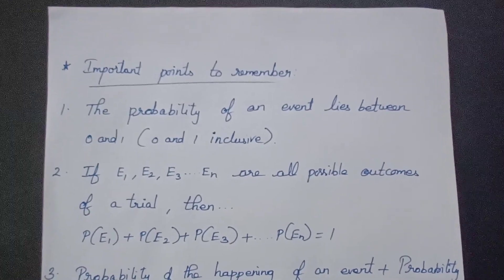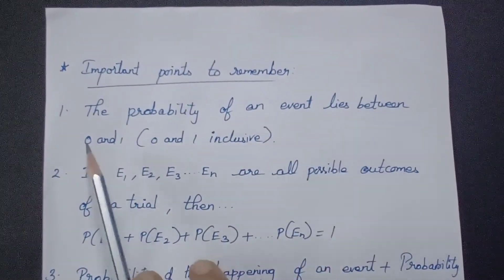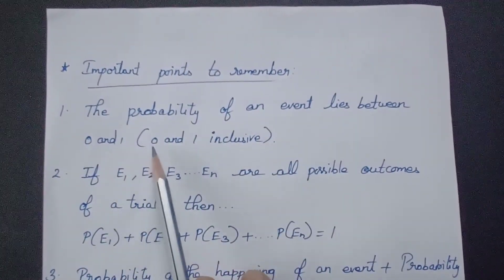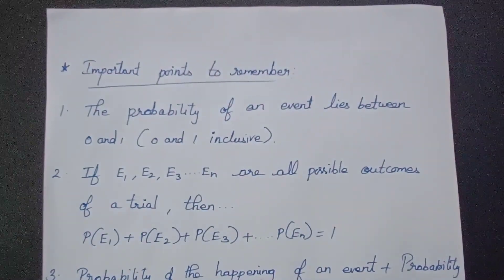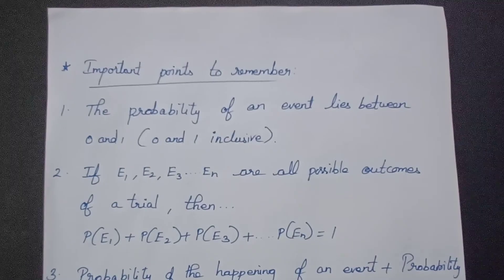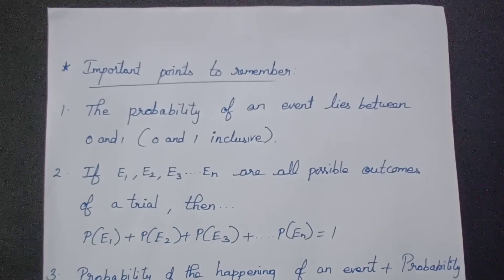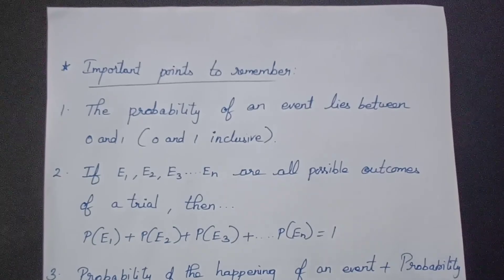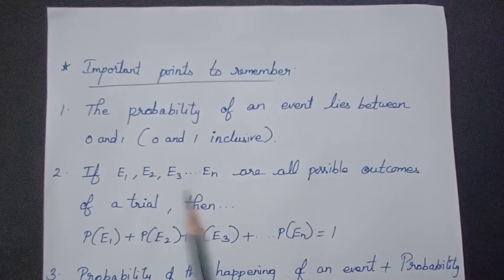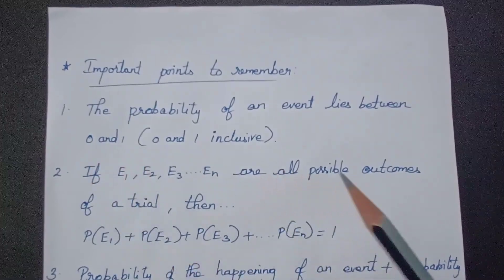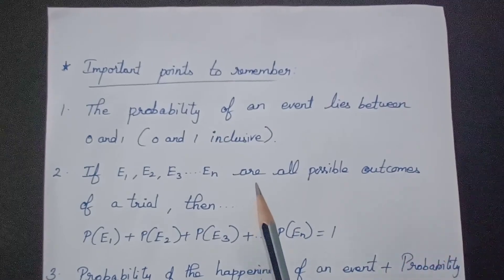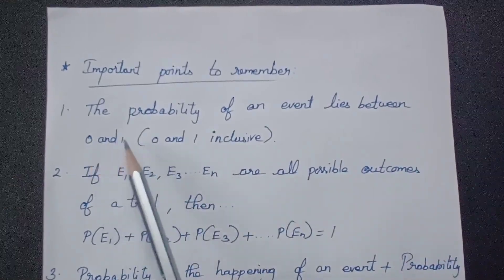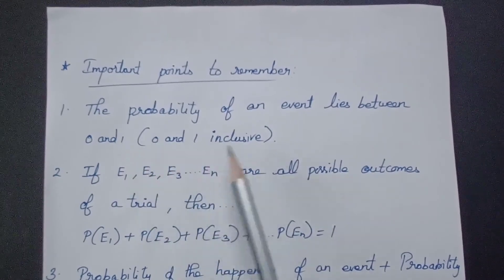The first important point: the probability of an event lies between 0 and 1, inclusive. It can be values like 0.1, 0.5, 0.3, or 0.9. The probability of an event always lies between 0 and 1, and both 0 and 1 are included.